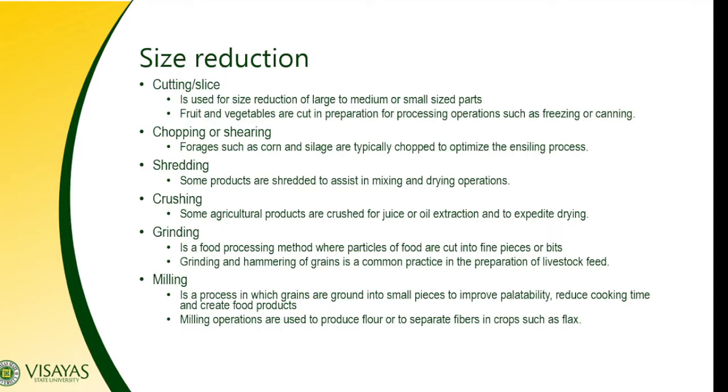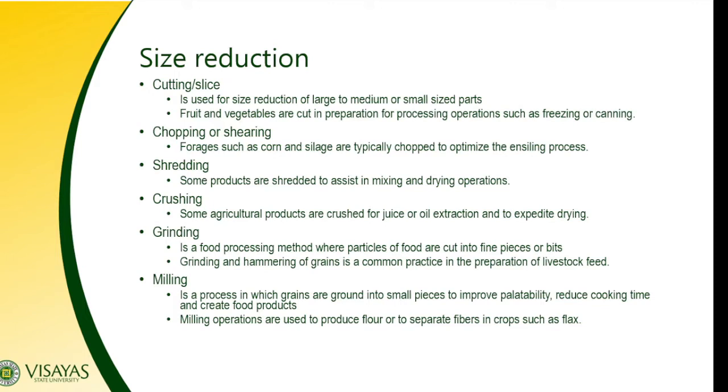Another size reduction activity is chopping or shearing. Forages such as corn and silage are typically chopped to optimize the ensiling process. Some products are shredded to assist in mixing and drying operations — for example, coconut meat is shredded using a shredder before further processing. Some agricultural products are also crushed for oil extraction or to facilitate drying — crushed to release the juice.